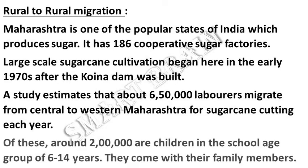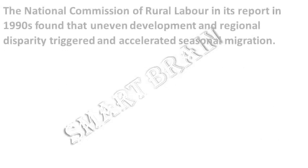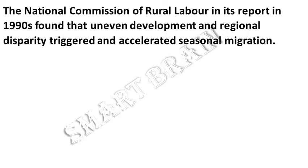Of these, around 2 lakh are children in the school age group of 6 to 14 years, who come with their family members. The National Commission of Rural Labor, in its report in the 1990s, found that uneven development and regional disparity triggered and accelerated seasonal migration.